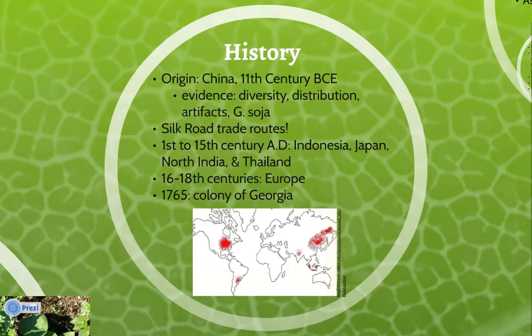This exchange most likely occurred through the Silk Road trade routes. From the 16th to the 18th century, European sailors, missionaries, and explorers came into contact with soybeans and soy foods during their travels. And in 1765, the first soybeans were planted in the colony of Georgia. This is a map of the major distribution of soybean cultivation around the world.